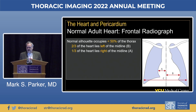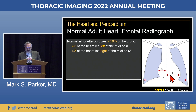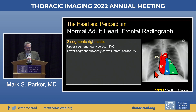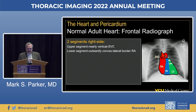On a standard chest X-ray, drawing a plumb line straight down the thoracic spine, about two-thirds of the myocardium extends to the left of that line and about one-third extends to the right. On the right side of the cardiomediastinal silhouette, we have two segments: the upper segment is nearly vertical, created by the superior vena cava, and the lower segment is outwardly convex and forms the lateral border of the right atrium.